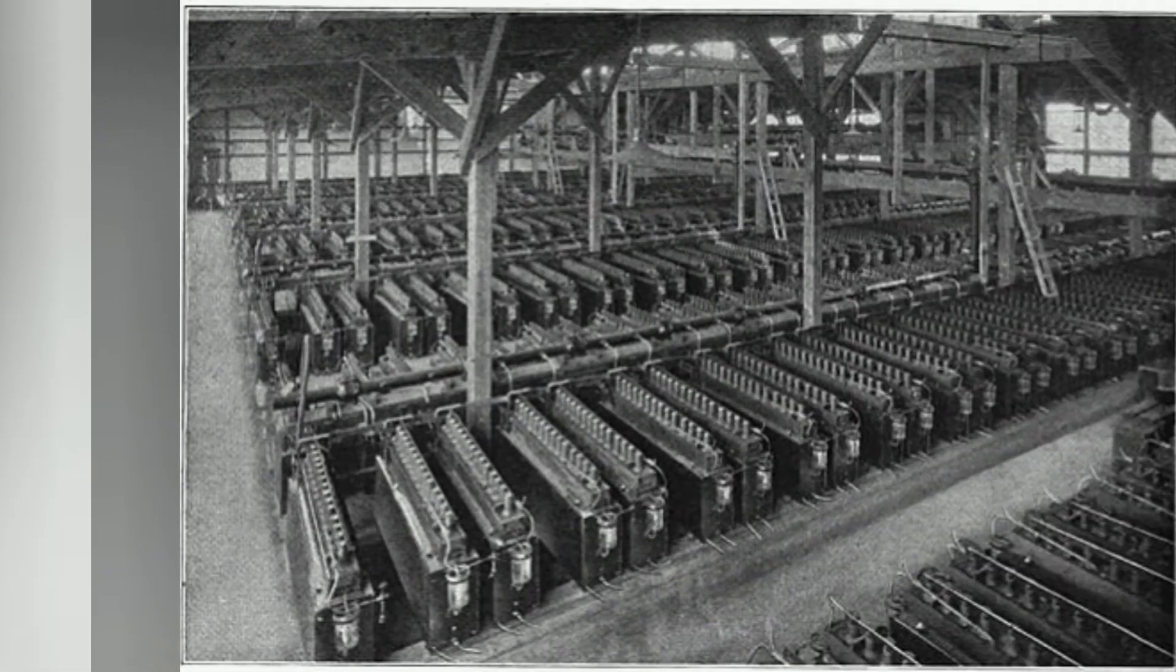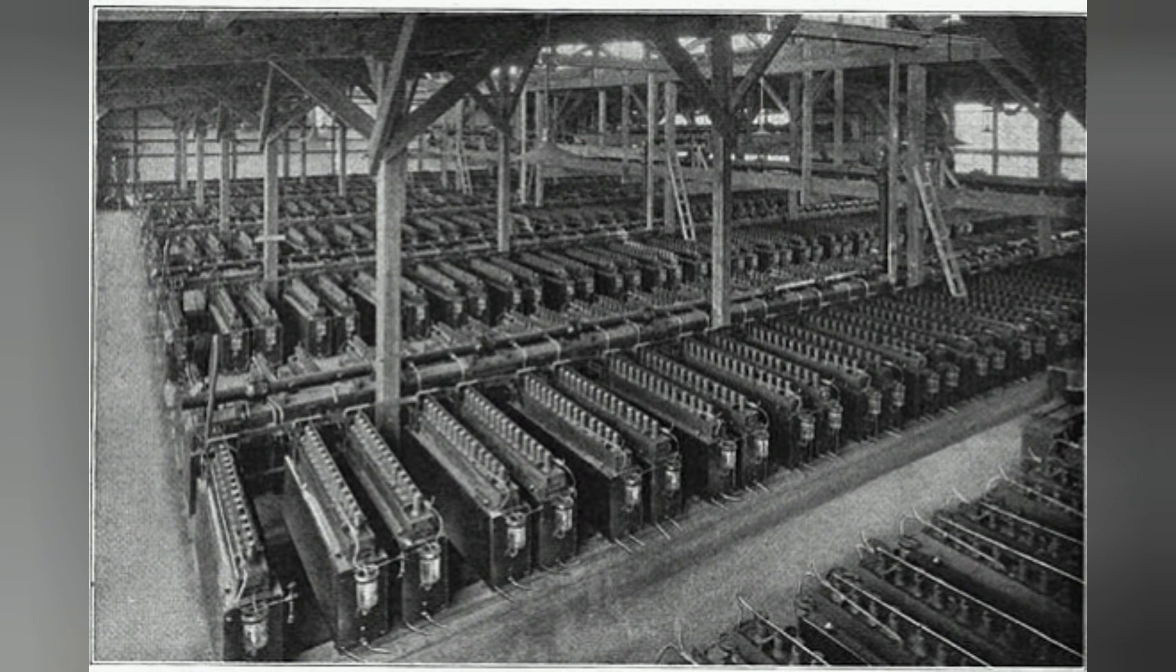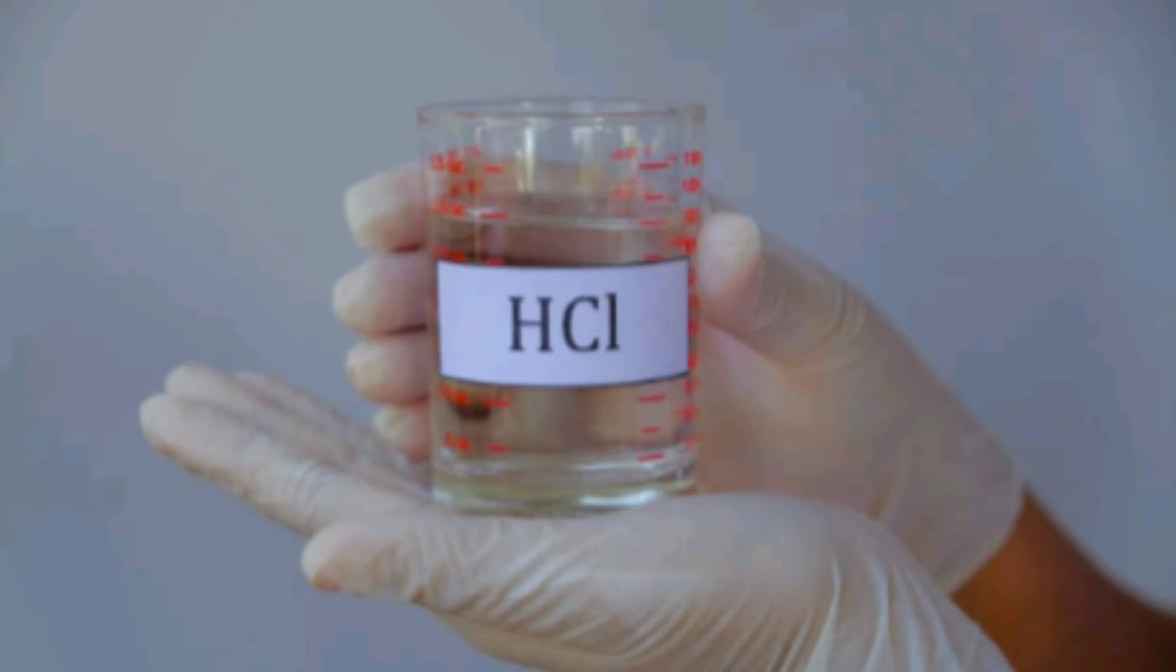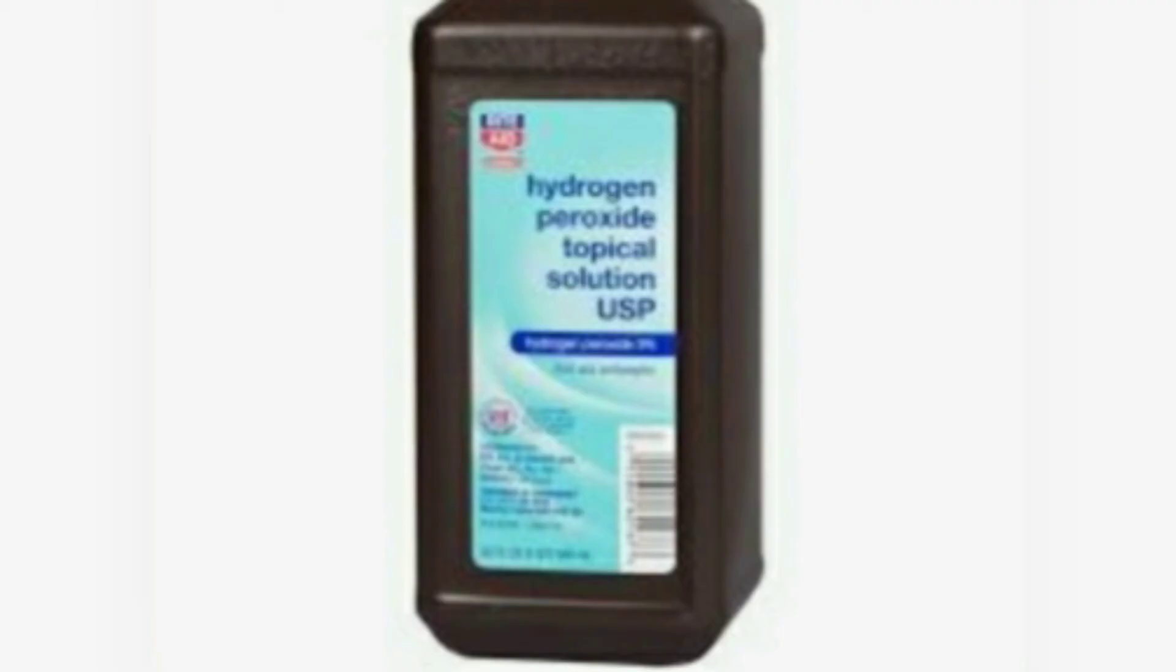However, it wasn't used on an industrial scale until way later in the 1890s, an example being this image of a chloroalkali plant from around 1920. And during the 20th century, it turned into the primary means for the production of chlorine. In addition to the chlorine gas and sodium hydroxide produced, there is also a whole bunch of hydrogen produced, the same number of moles of hydrogen as there was chlorine. And this hydrogen is generally used in the production of things such as hydrochloric acid, ammonia, hydrogen peroxide, etc.